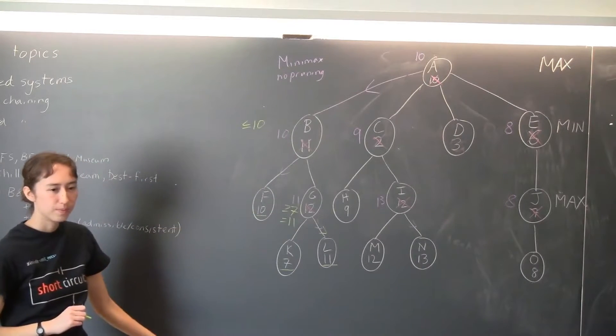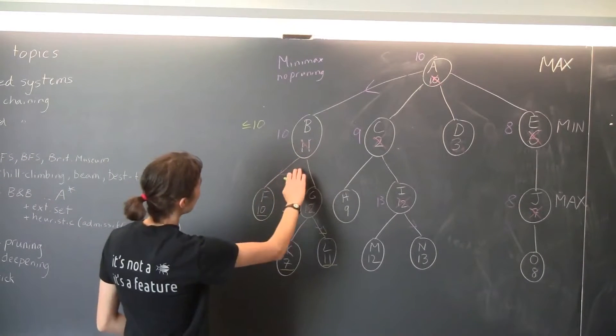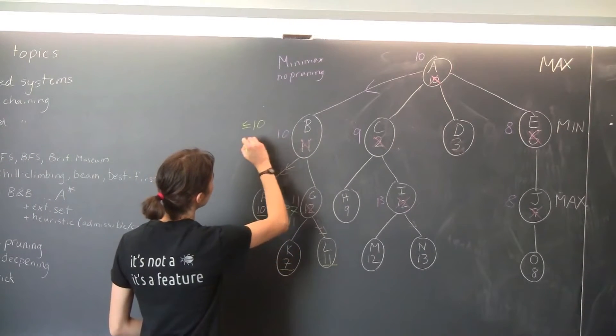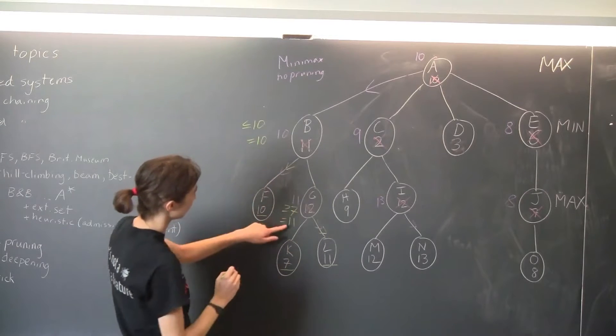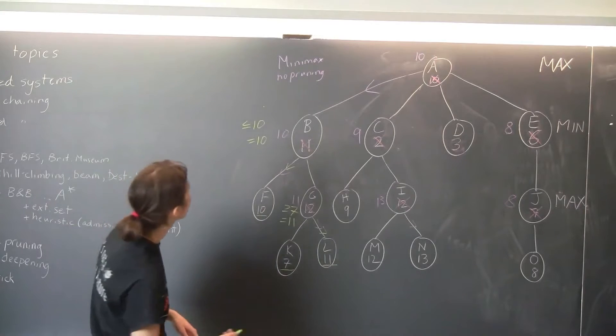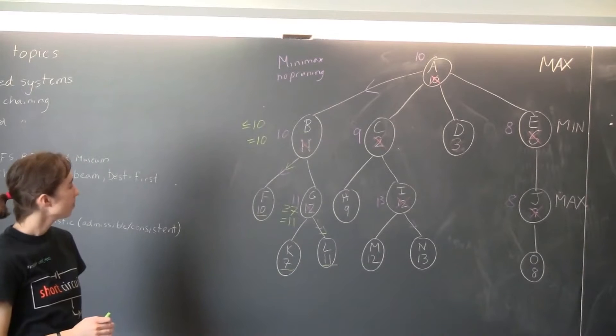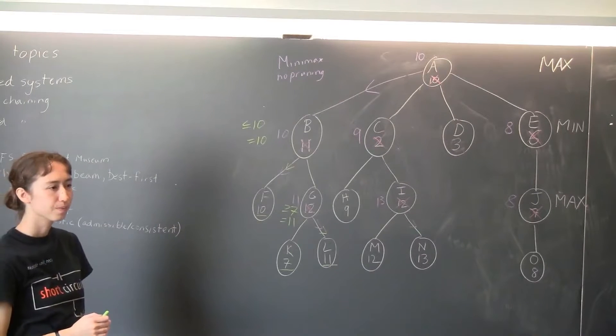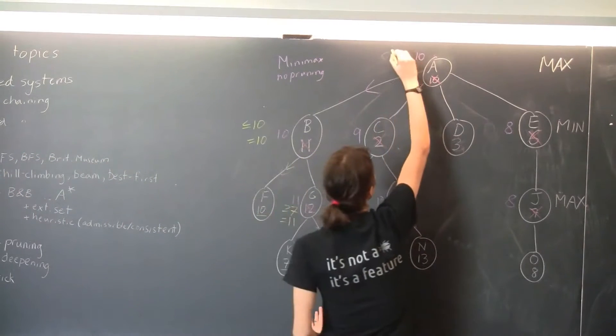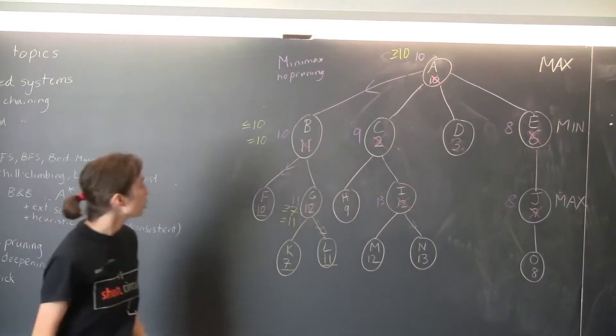So what does that tell us at B? Score of 10. Yeah, so that tells us that at B, min will definitely go up. That's going to be equal to 10, because min doesn't want this 11. So, so far, we're getting the same result as minimax. What does this tell us at A? It's going to be at least 10. Yeah, Max is going to get at least 10. Max wants to go and look at C, G, and E to see if those can be any better.